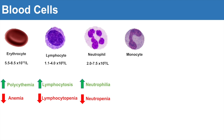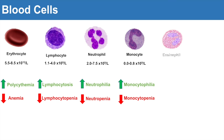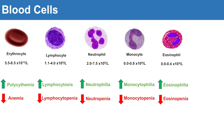Another white blood cell is monocytes. Their reference range is quite low — typically 0.0 to 0.8 times 10 to the 9th per liter. Anything higher would be monocytophilia, and anything lower would be monocytopenia. Another white blood cell is eosinophils, named because of their high level of eosin staining. Their reference range is typically 0 to 0.4 times 10 to the 9th per liter. Anything higher would be eosinophilia — seen in allergic reactions or parasitic infections — and anything lower would be eosinopenia.